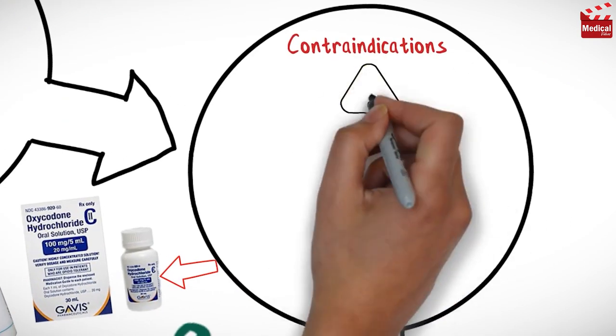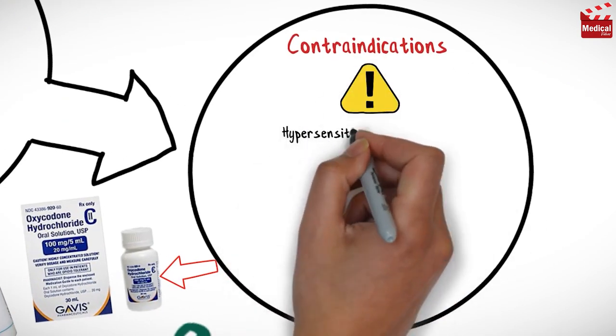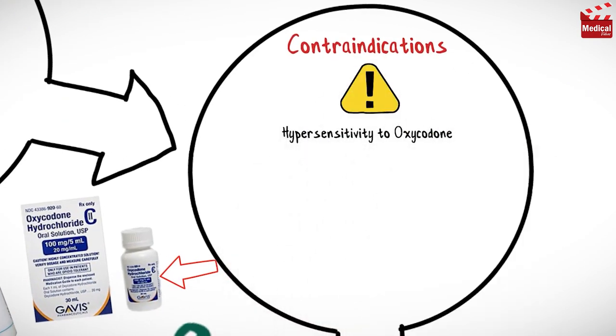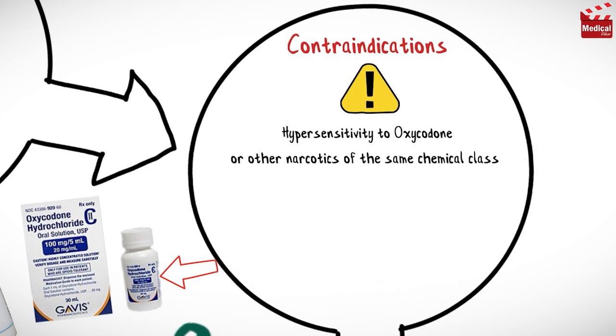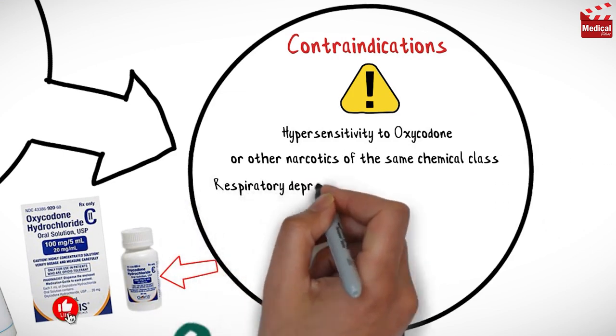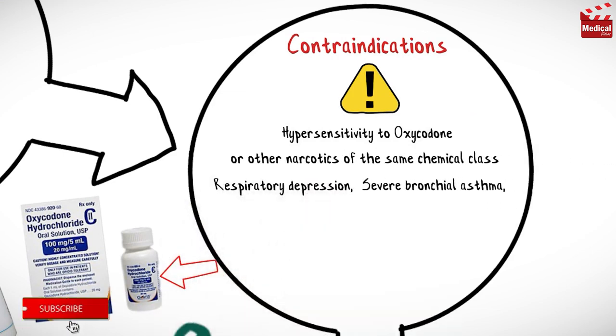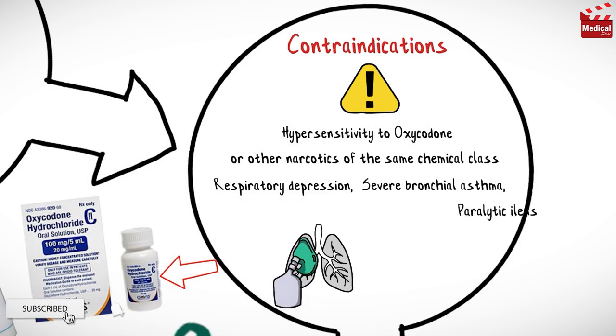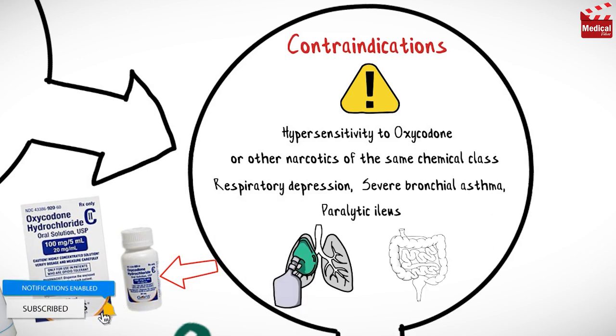Oxycodone is contraindicated in case of hypersensitivity to oxycodone or other narcotics of the same chemical class, respiratory depression, severe bronchial asthma, and paralytic ileus.